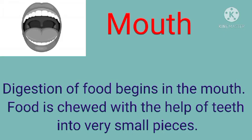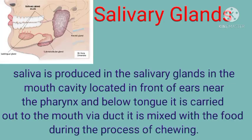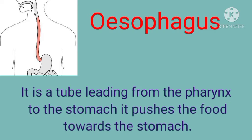The pharynx is where the esophagus and the trachea open into. The salivary glands produce saliva which is added to the food during chewing by the teeth. These salivary glands are located in the mouth cavity, near the ears, and below our tongue. Saliva is brought to the mouth via a duct and mixes with the food.